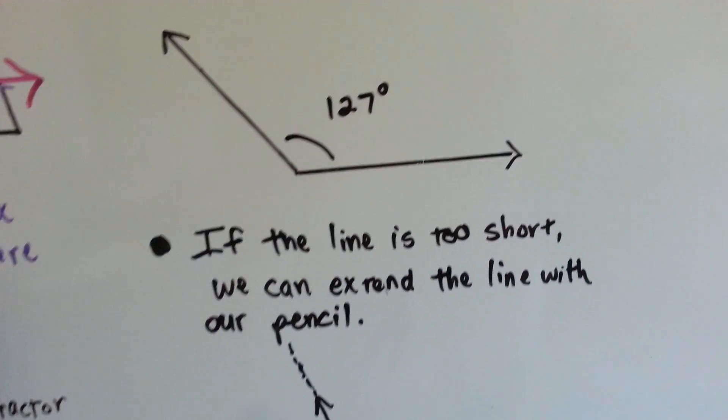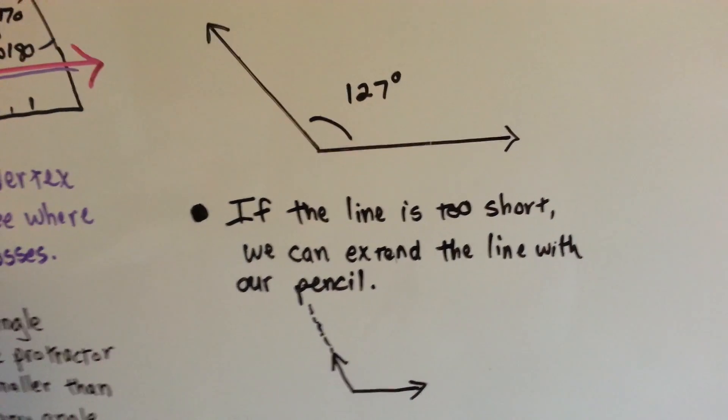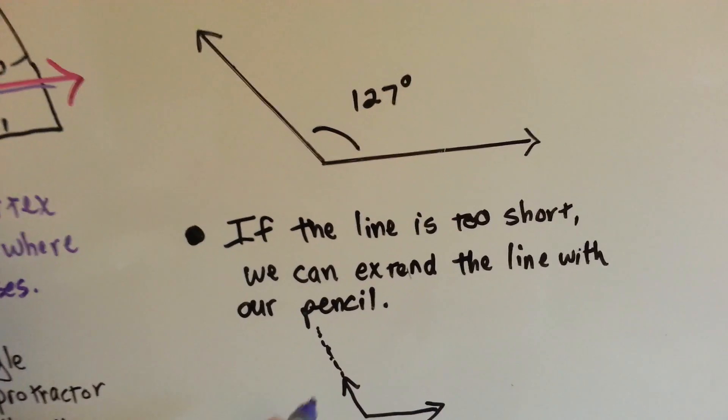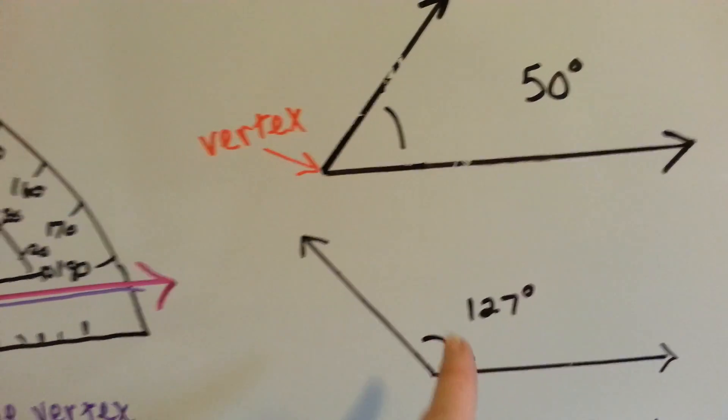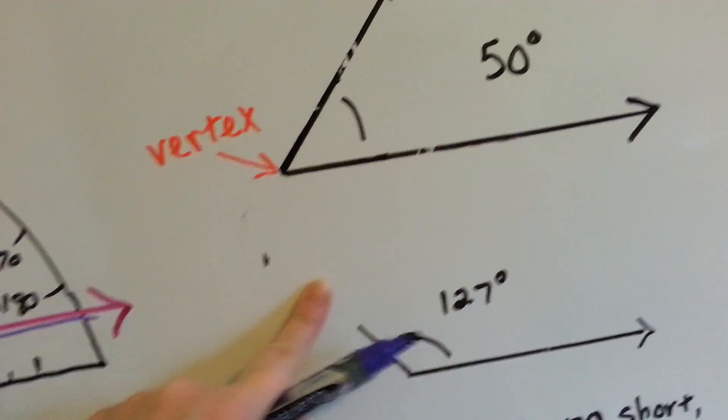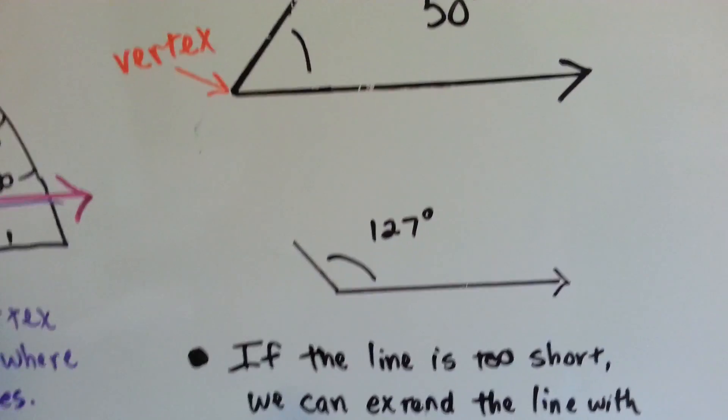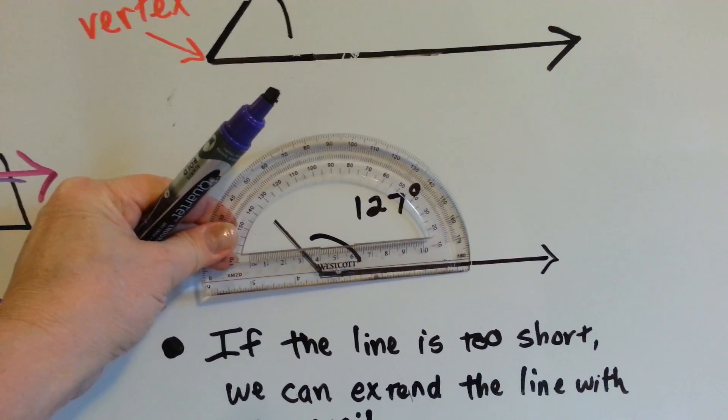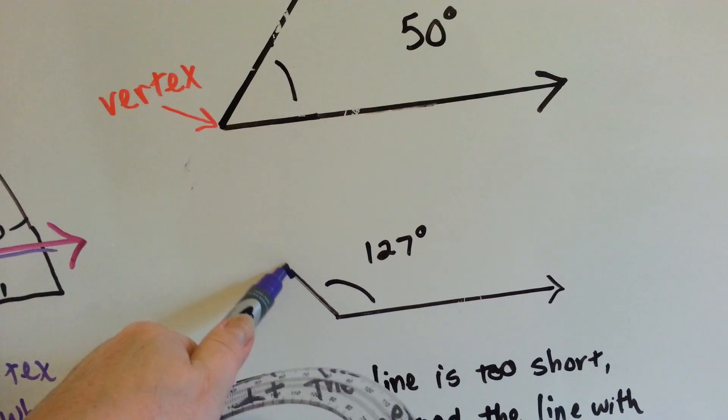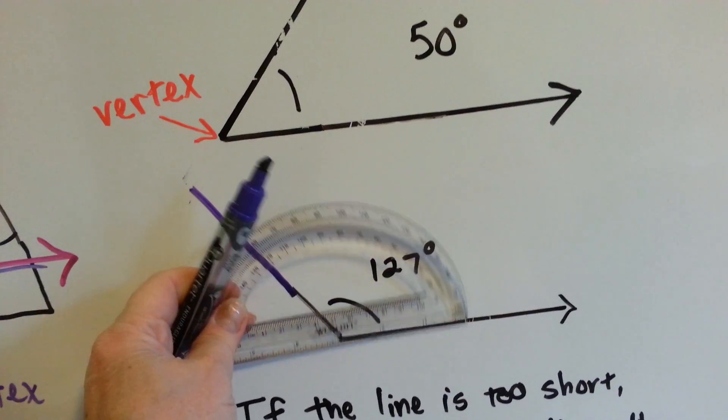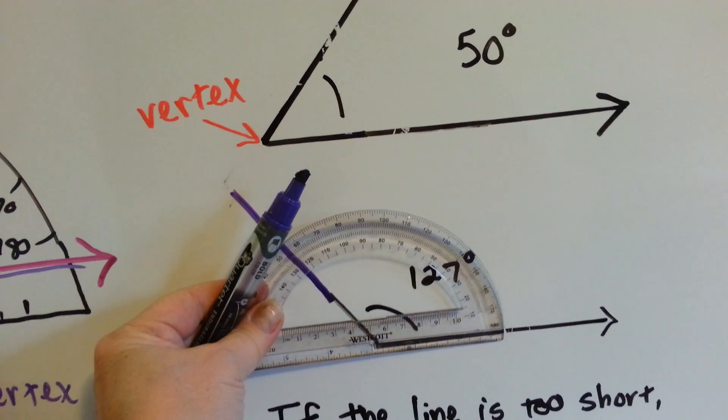So if the line is too short, we can extend the line with our pencil and just take your pencil and make the line longer. So if we wanted to measure this one but it was only that long, and we went like this and said, well, I can't see because the line's not long enough, then make the line longer with your pencil so that you can see where it falls.